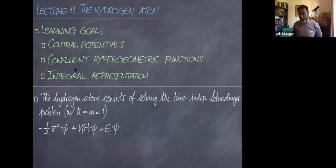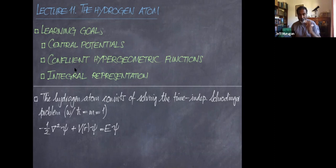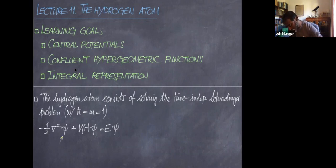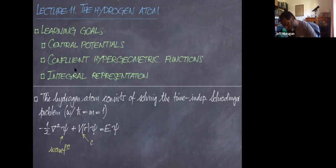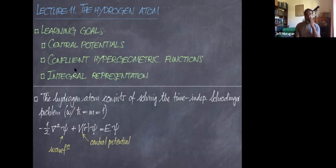The problem we want to solve is: minus one-half del-squared psi plus some potential V of r times psi equals E psi. This is the wave function as usual, and we are working with a central potential — a potential that depends only on how far away from the source you are.